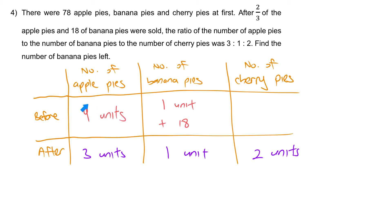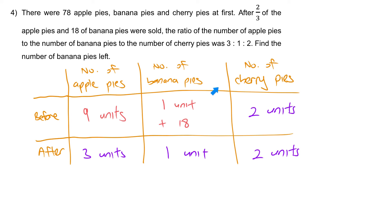Nothing happened to cherry pies, so we bring that 2 units across unchanged. In total, apple pies plus banana pies plus cherry pies at first must equal 78. That gives us 9 units plus 1 unit plus 18 plus 2 units, which is 12 units plus 18 equals 78.